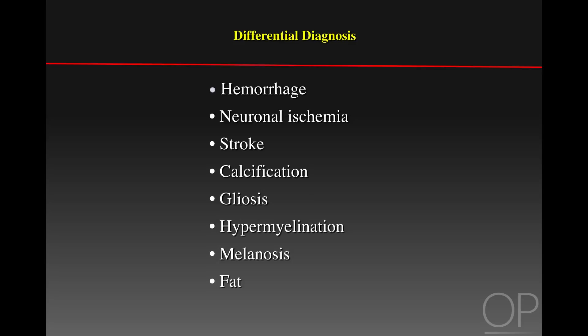In addition to hemorrhage, the differential includes focal neuronal ischemia or stroke, both primary and secondary calcifications, gliosis, hypermyelination, melanosis, and fat. Although they can have a very similar appearance,